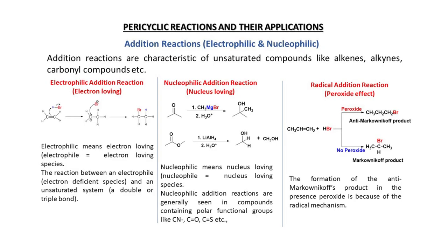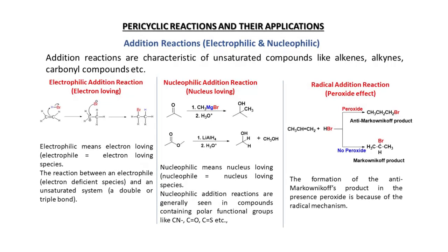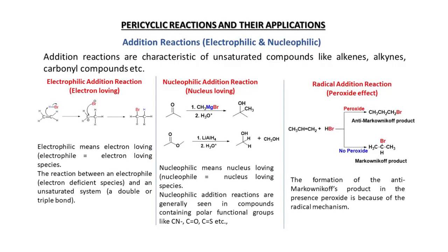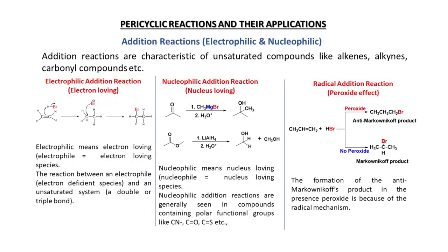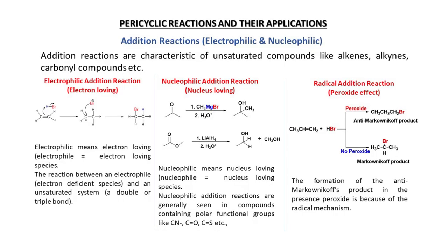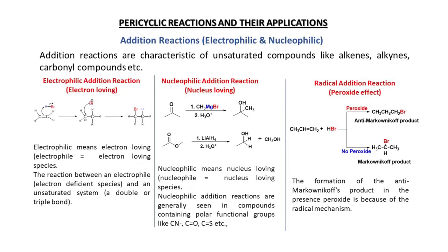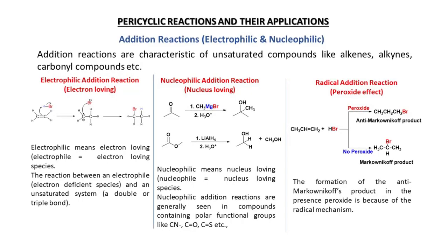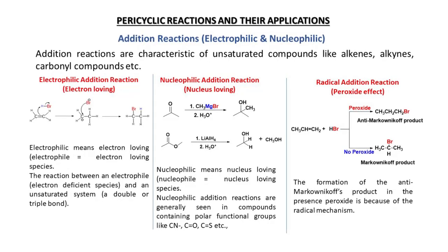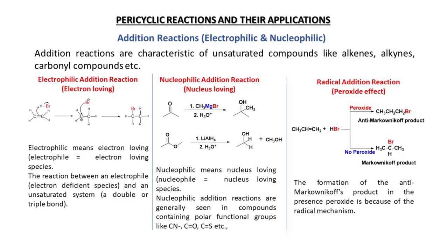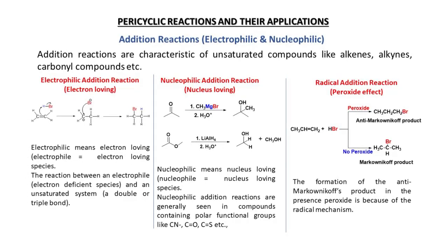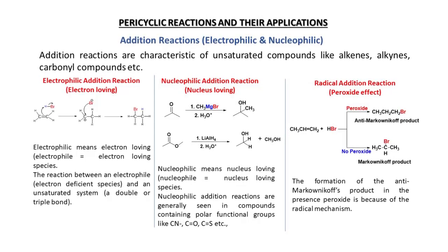Let us look at the five types of organic reactions discussed before the development of pericyclic reactions. First, addition reactions are characteristic of unsaturated compounds like alkenes, alkynes, and carbonyl compounds. There are three subtypes: electrophilic addition, where an electrophile is taken up by the unsaturated system forming a carbocation, which is then attacked by a nucleophile; nucleophilic addition, where the nucleophile attacks first; and radical addition, which generally occurs in the presence of a peroxide.